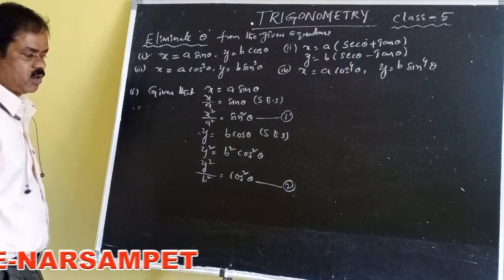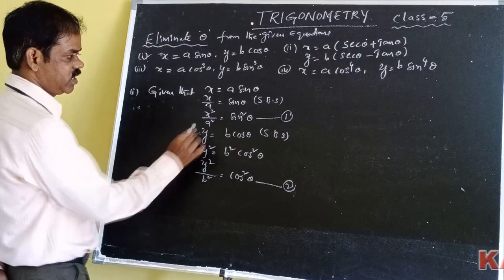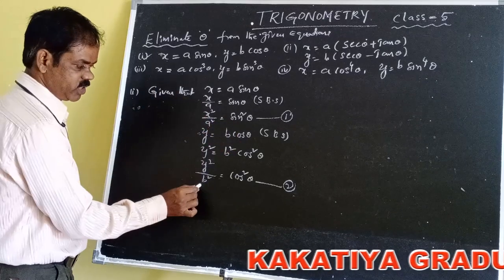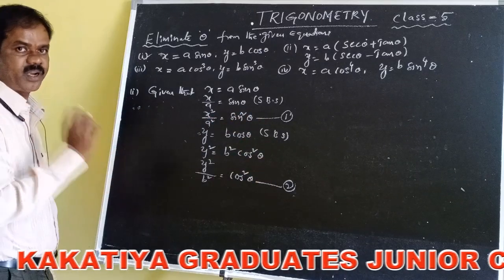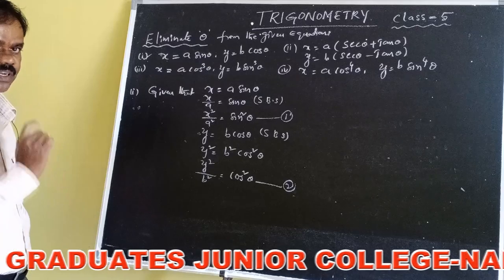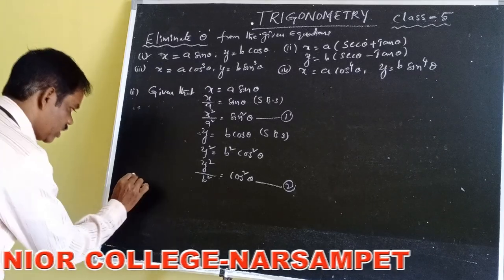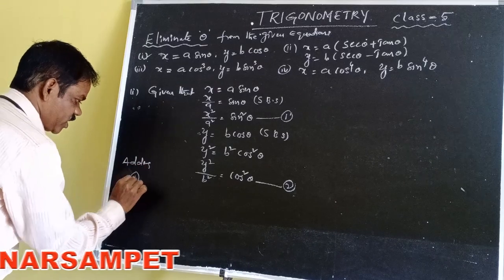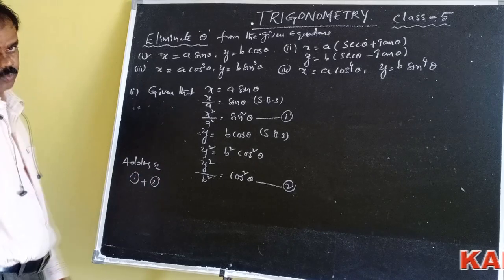Observe the first equation and the second equation: x²/a² = sin²θ and y²/b² = cos²θ. From these two equations, now we have to eliminate theta by using the first identity property. What is the first identity? Sin²θ + cos²θ = 1. So, adding equation number 1 and equation number 2.